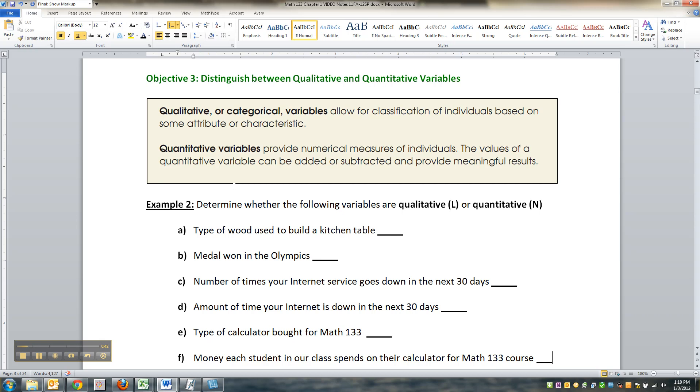Alright, so let's look here. The type of wood used to build a kitchen table - that's qualitative for sure. Like oak, maple, pecan, that kind of thing. That's a quality. You can't add up oak plus maple.